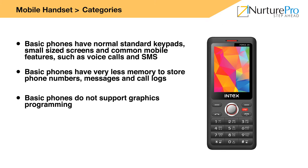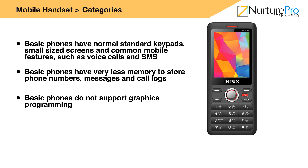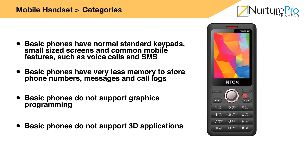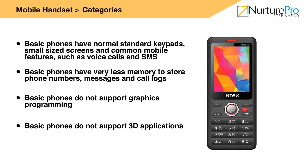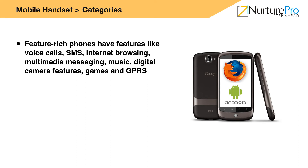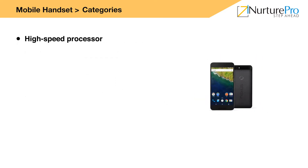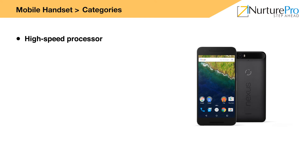Basic phones have proprietary operating systems. To develop new applications that can work on such phones, the developer has to work in closed environments. The processing power in these phones is limited and they support only simple 3D applications. Feature-rich phones: Feature-rich phones have features like voice calls, SMS, internet browsing, multimedia messaging, music, digital camera, games, and GPRS. These mobile phones have multimedia processors, large screens, and more memory space than basic phones.